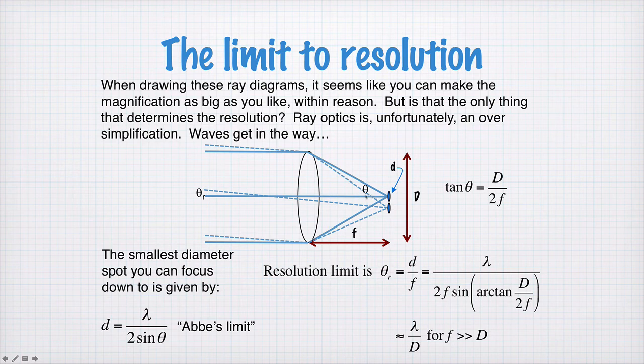So tan theta will be given by half the diameter of the lens. So that's capital D divided by 2. This height here is capital D divided by 2, divided by f. That will be the tan of theta. So tan theta is D divided by 2f. So theta is inverse tan of D divided by 2f.